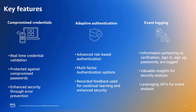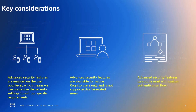Now that we've reviewed the key features, let's go over some key things to consider when implementing Cognito's ASF. First, ASF is enabled at the user pool level, which means we can customize the security settings to suit our specific requirements. Additionally, ASF offers the capability to customize security settings at a more granular level, specifically at the app client level. It is also important to remember that ASF is available for native Cognito users only and is not supported for federated users. Lastly, ASF cannot be used with custom authentication flows.